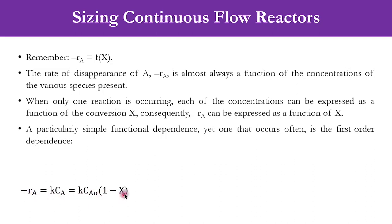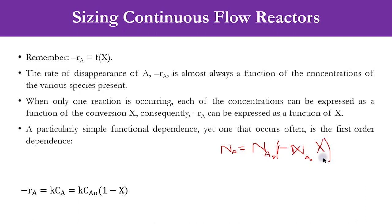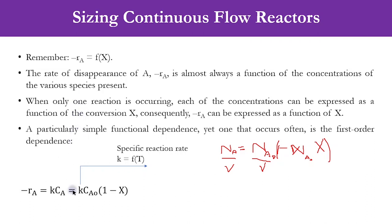You will see how that equation has been transformed. If you remember that NA equals NA0 minus NA0·X, which we used during the derivations — if you take NA0 common, it becomes NA0 times (1 minus X). Divide that by the volume and you get CA equals CA0 times (1 minus X). That is how you derive that expression, where k is a function of temperature — it is a specific reaction rate constant. When only one reaction is occurring, each concentration can be expressed as a function of conversion.